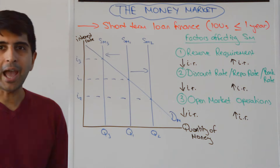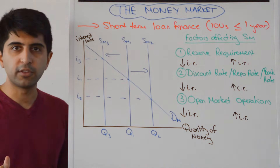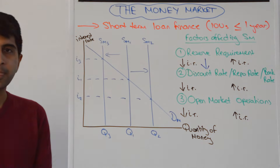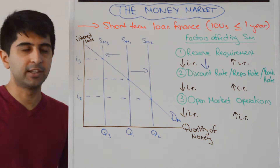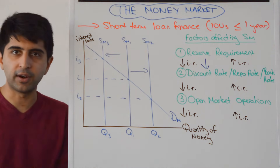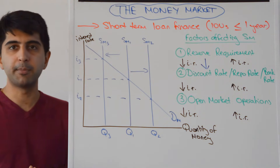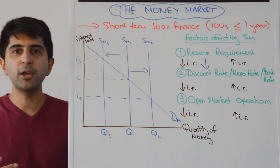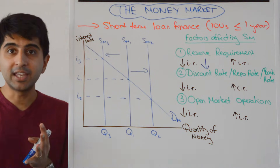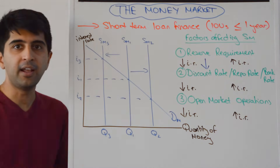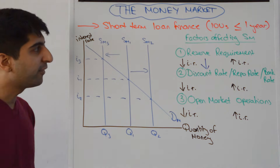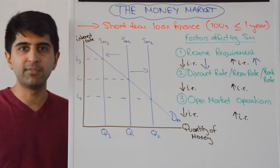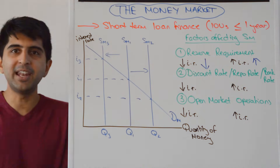Let's look at the reserve requirement. If the central bank wanted to reduce interest rates, they could reduce the reserve requirement, meaning commercial banks don't need to keep as much money in the Bank of England. This is not yet regulated in the UK — it's theoretical here — but in the US there is a requirement. By reducing the reserve requirement, commercial banks can keep more money in the real economy, increasing the money supply and thus reducing interest rates. Vice versa, the Bank of England could increase the reserve requirement, forcing commercial banks to keep more money there, sucking money out of the real economy, reducing the money supply and increasing interest rates.